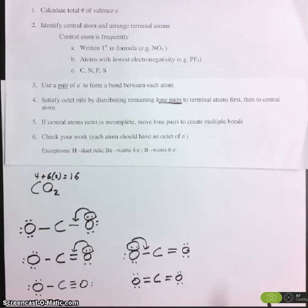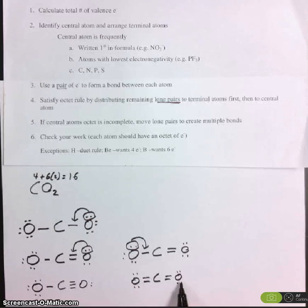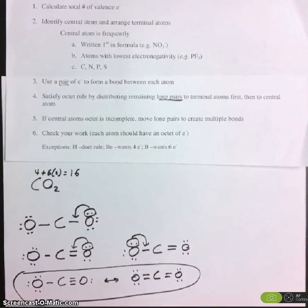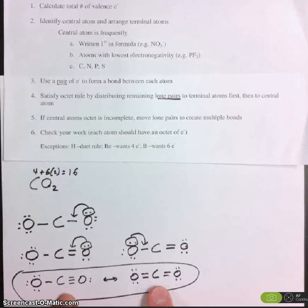And if you look at step number six, check your work, you'll see that every atom here has eight electrons around it as well. So these two here are both appropriate Lewis dot structures for carbon dioxide. In fact, any time you can draw more than one correct Lewis dot structure, they're called resonance structures.